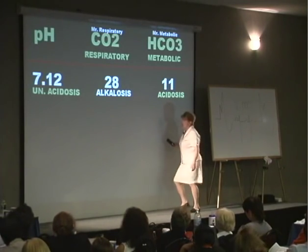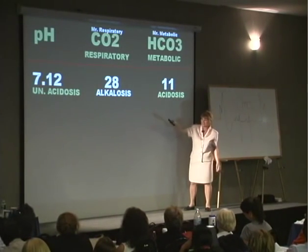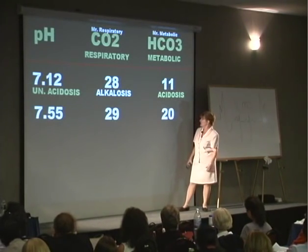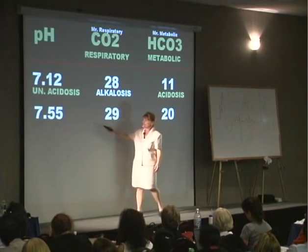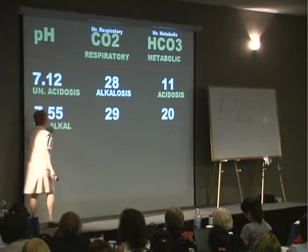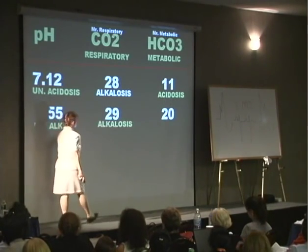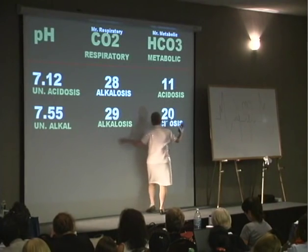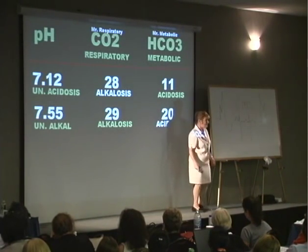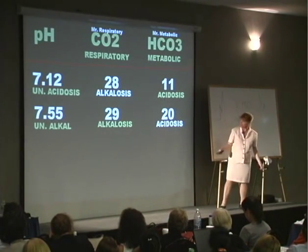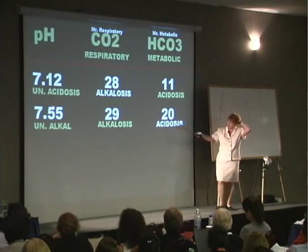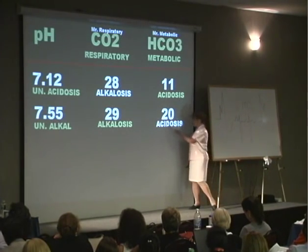It's an uncompensated metabolic acidosis. And because I'm in an acidotic state, I'm blowing off my CO2. Next example: 7.55, 29, and 20. My baby's first name is uncompensated, last name alkalosis. A CO2 of 29 gives me alkalosis; a bicarb of 20 gives me acidosis. Respiratory has the same last name as my baby — therefore he did it, he's the father. It's an uncompensated respiratory alkalosis. And because I'm in an alkalotic state, I'm getting rid of my bicarb.